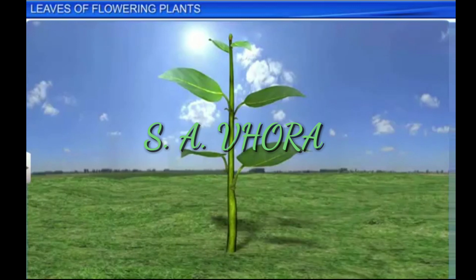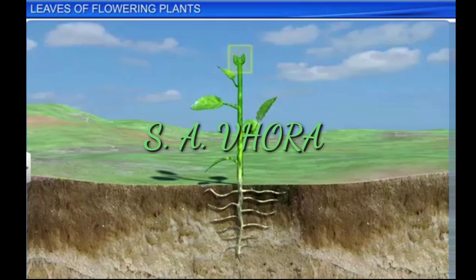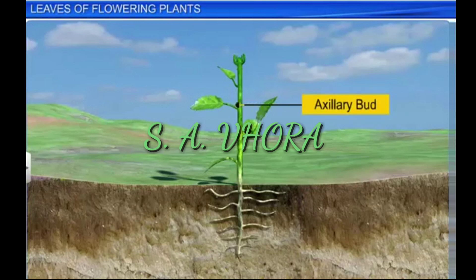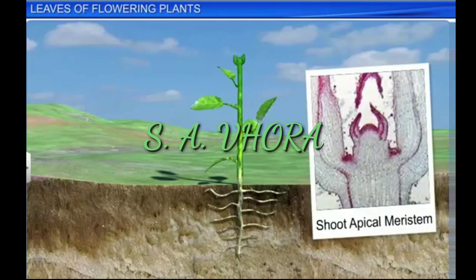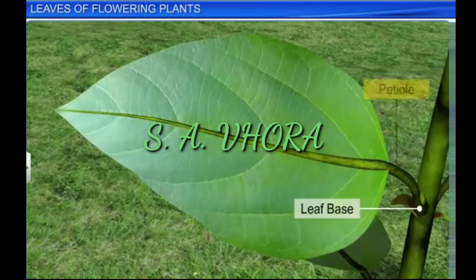Leaves can have many different shapes, sizes, and textures. Leaves originate from the shoot apex, the shoot apical meristem, and the axillary bud is an embryonic shoot located in the axil of a leaf. The meristem found at the shoot apex is known as the shoot apical meristem. A typical leaf has three main parts: leaf base, petiole, and lamina.